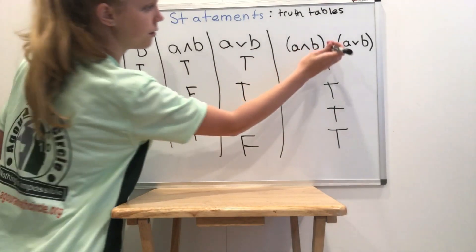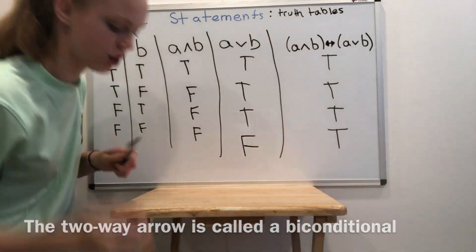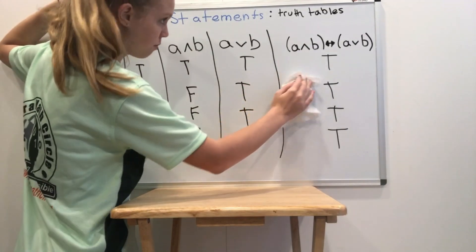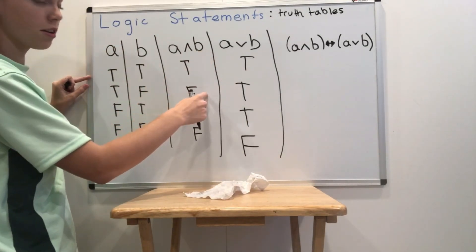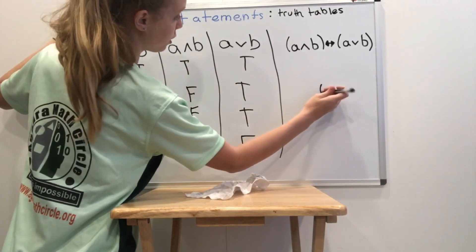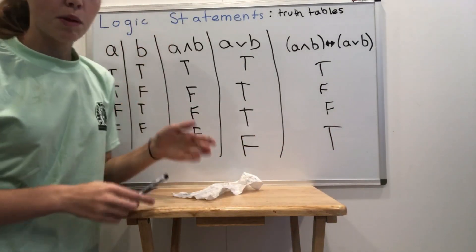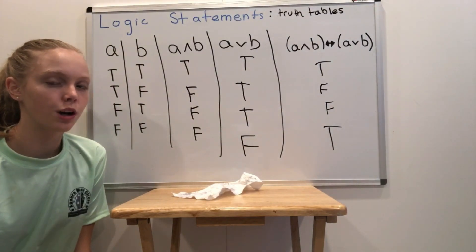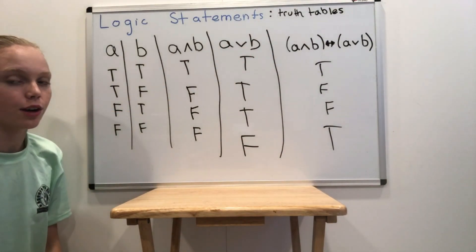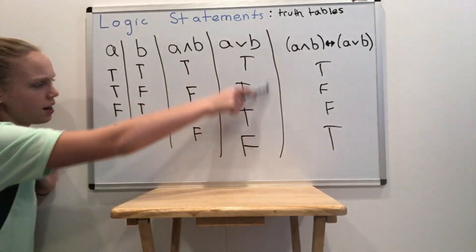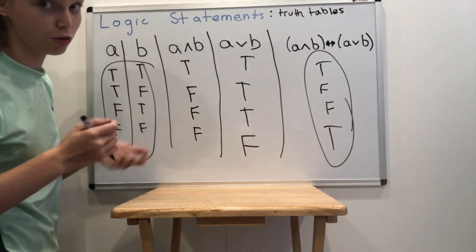A two-way arrow means they have to imply each other, so any time the truth values don't match, it is false. In this case, the truth values don't match in two rows, giving us falses there; everywhere else the truth values match and so they're true. There will be problems on the homework where you'll need to figure out more complex truth values. When we check your answer, we're just going to check the final truth value column compared to your A and B inputs, so if you write intermediate steps in a slightly different order it won't affect your score.